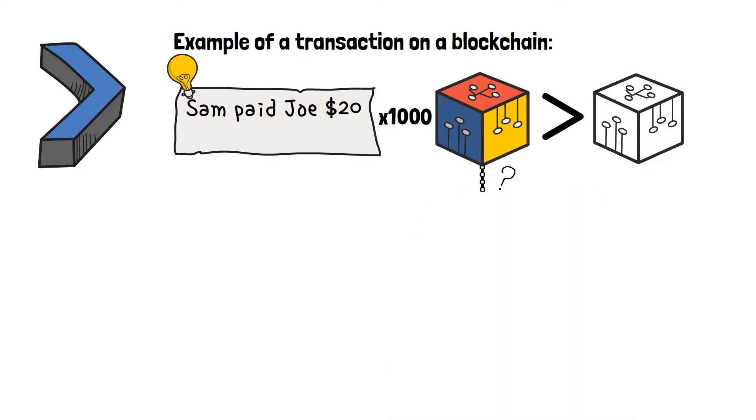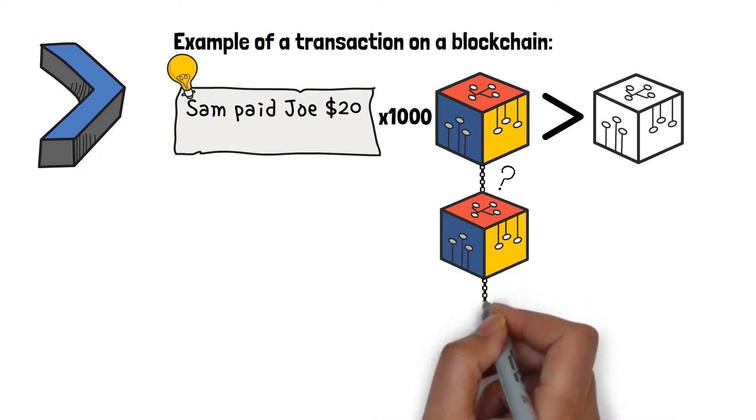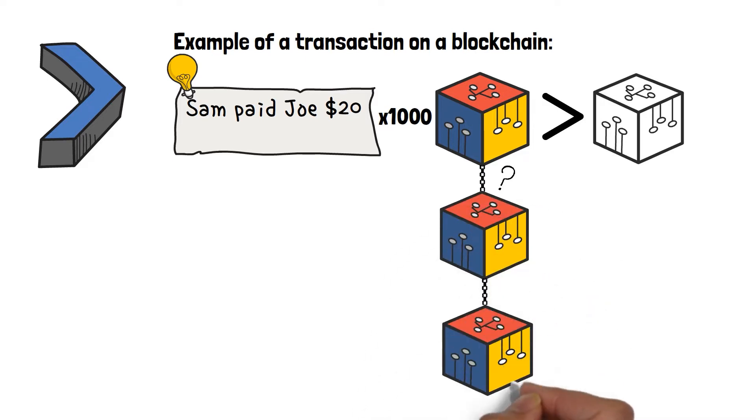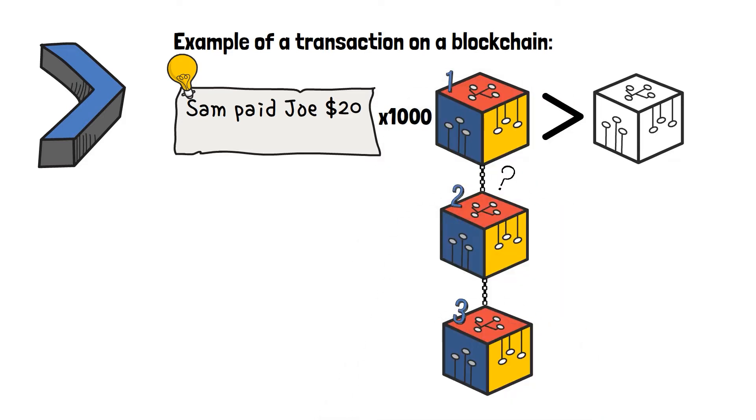So, where is the chain part here? As I explained to you before, the chain refers to the fact that all blocks of information are connected with each other, chronologically. A very simple way to look at it would be like this.